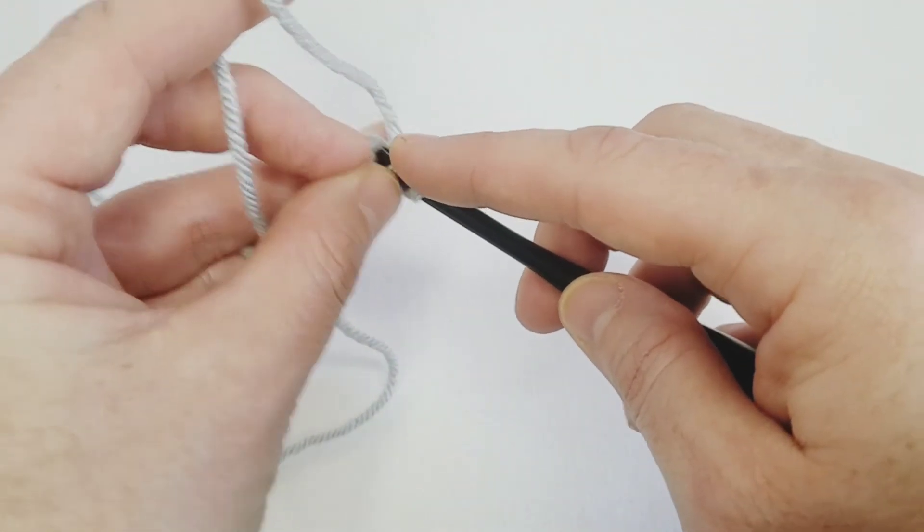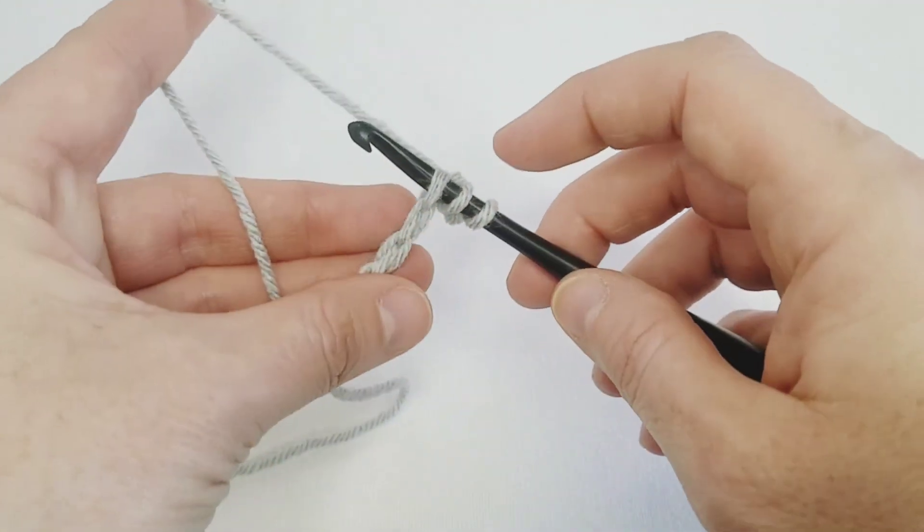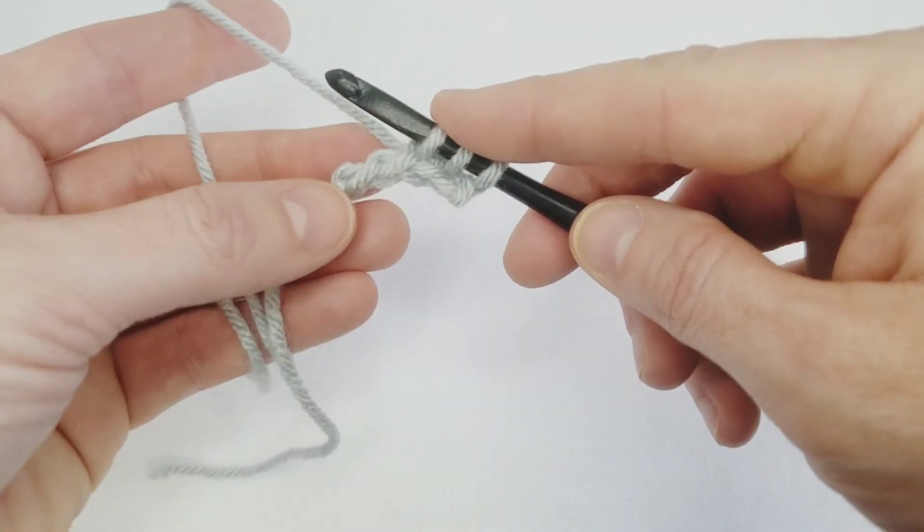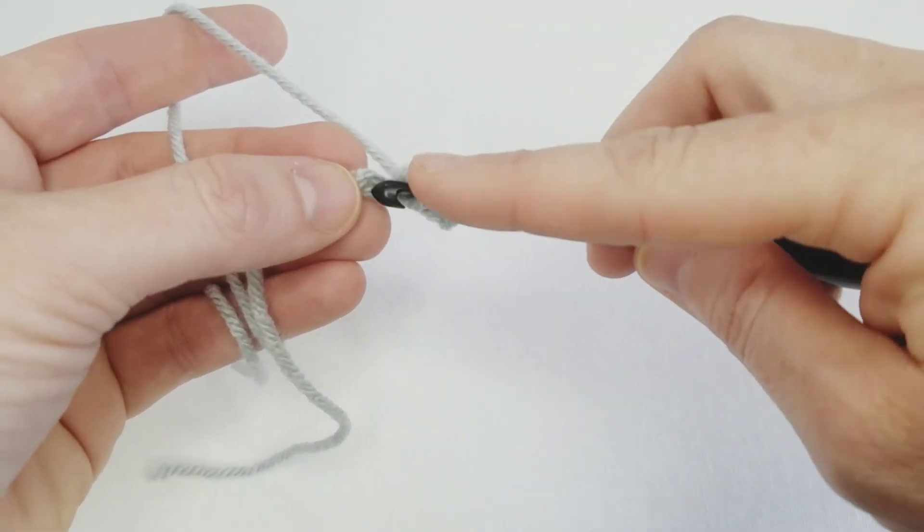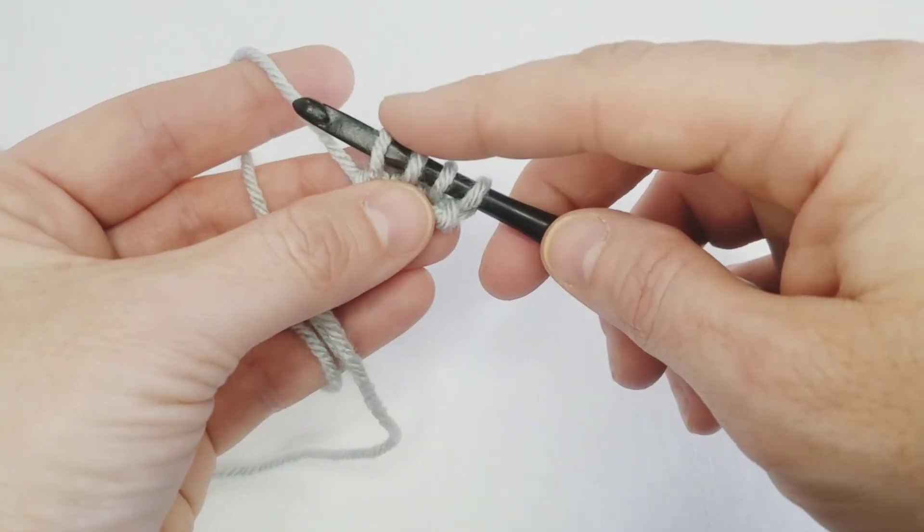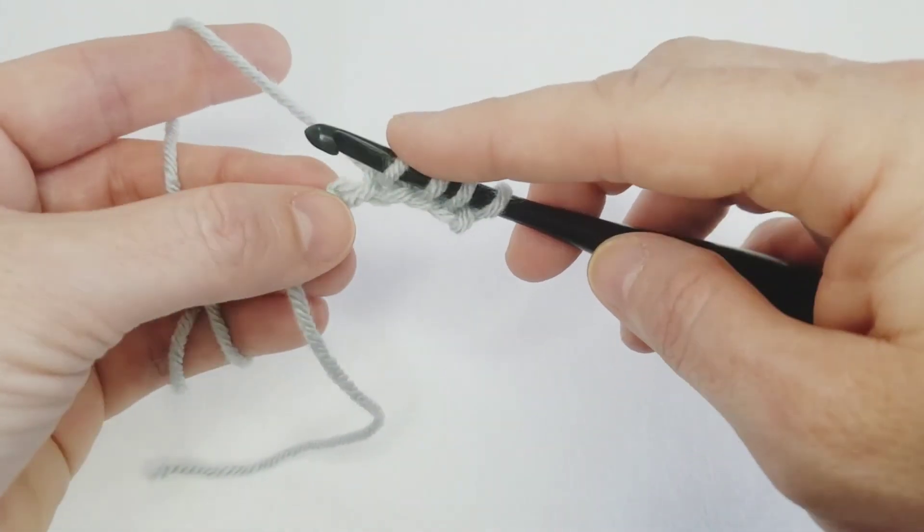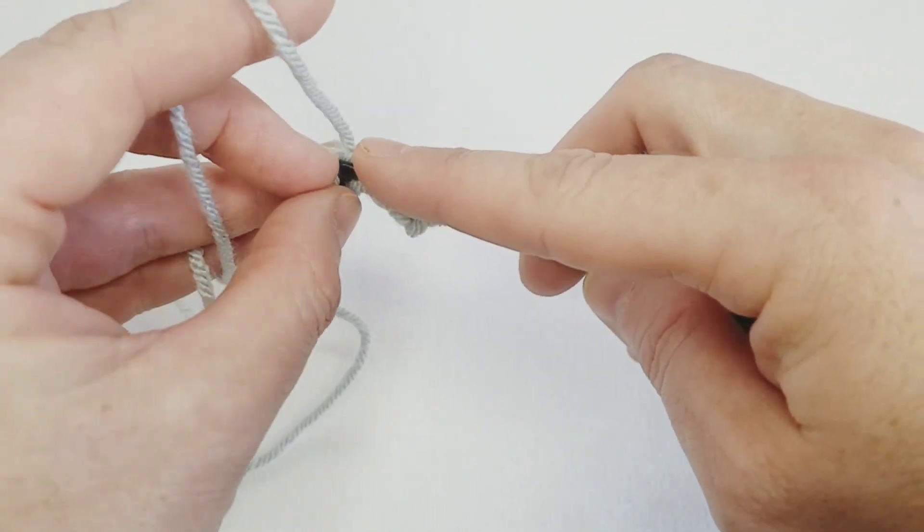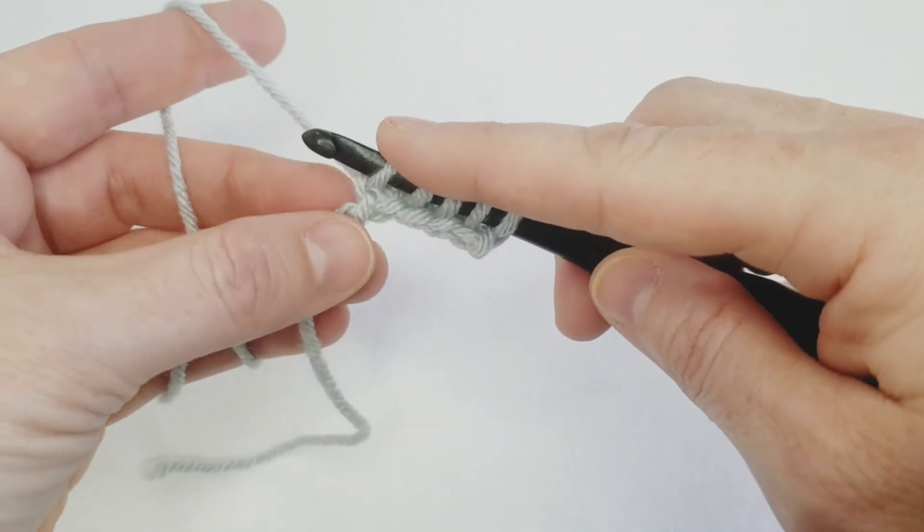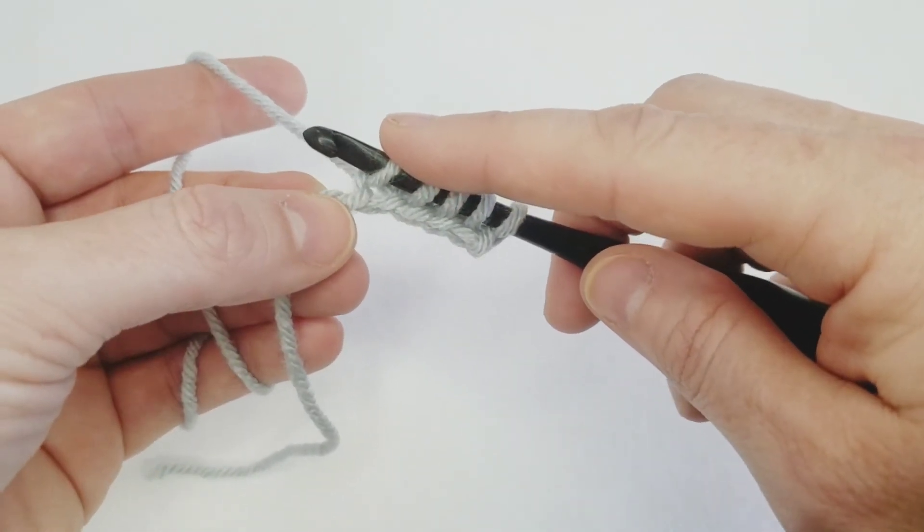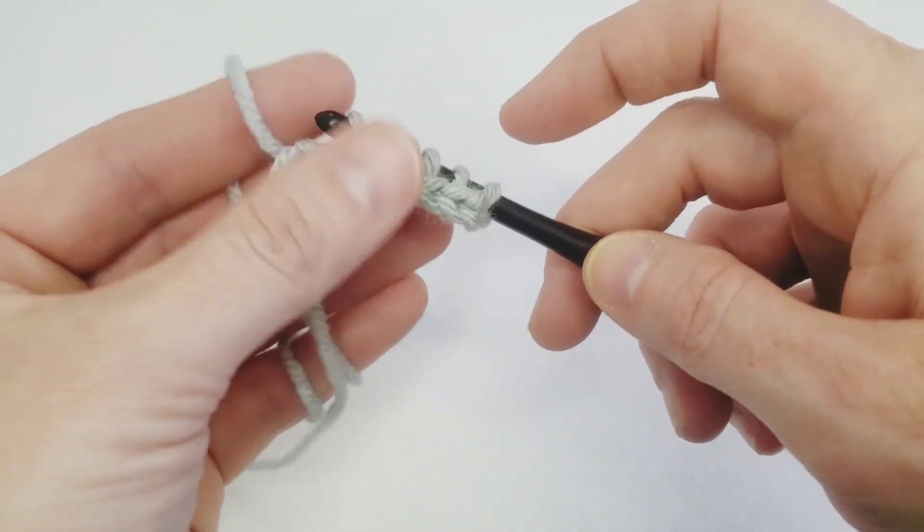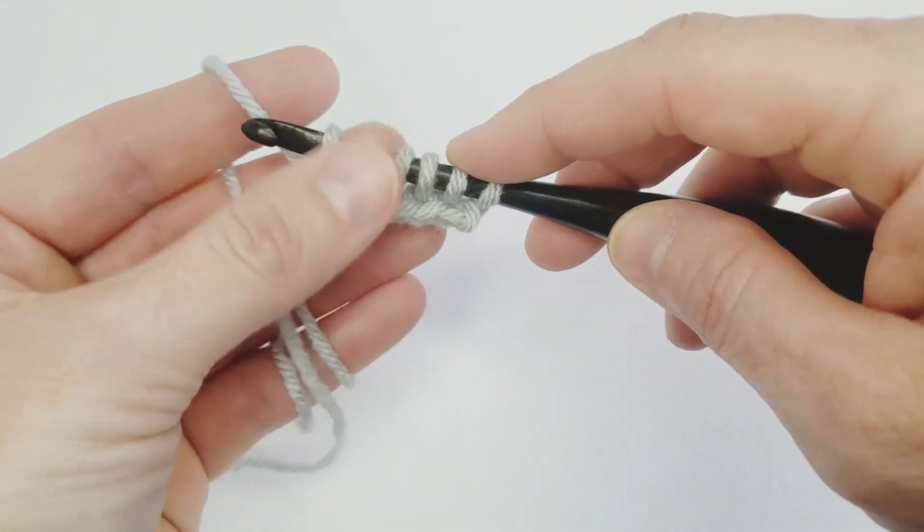So I'm going to find that back bump of my chain again, stick my hook through the back bump and pull up another loop. Again, I'm going to find my back bump, stick my hook through, and pull up a loop. And I'm just going to keep going until I've gone through all my chains, which should be the correct number of stitches that you need for your project or whatever number of stitches you want to play with.